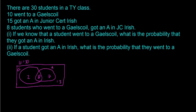So again, 10 went to a Gaelscoil, so 2 and 8. 15 got an A in Junior Cert Irish, 8 and 7. And there's 13 who didn't go to a Gaelscoil and didn't get an A. So we don't really worry about those for the moment.